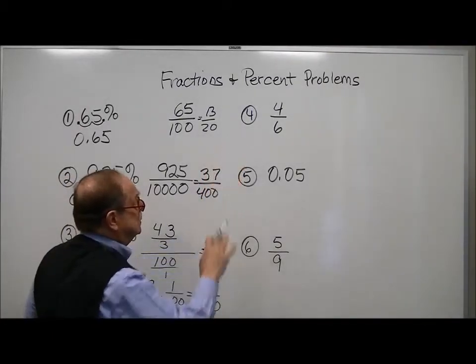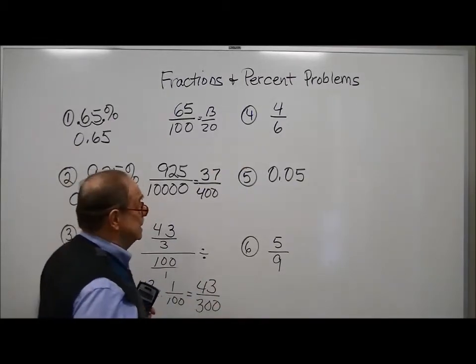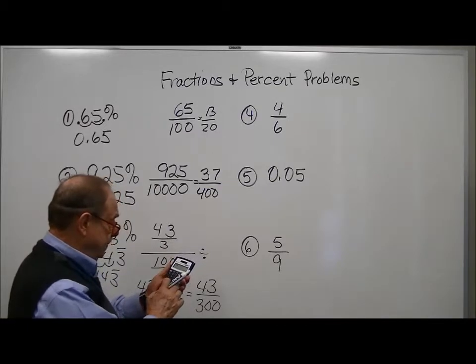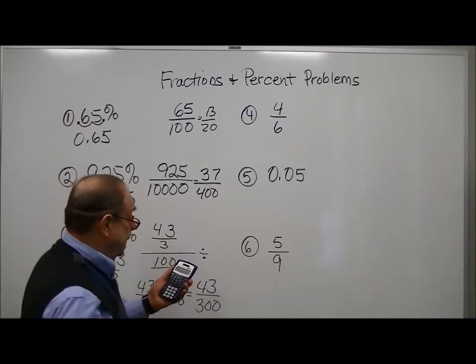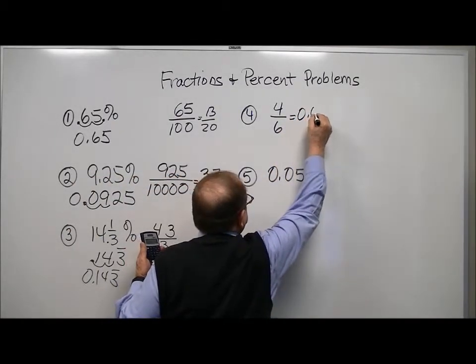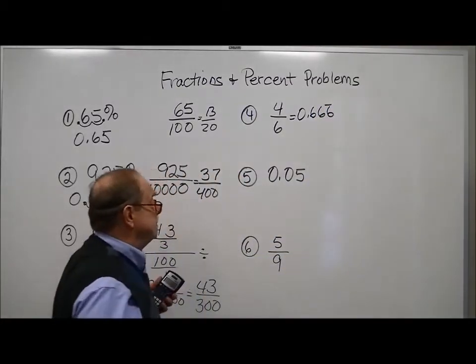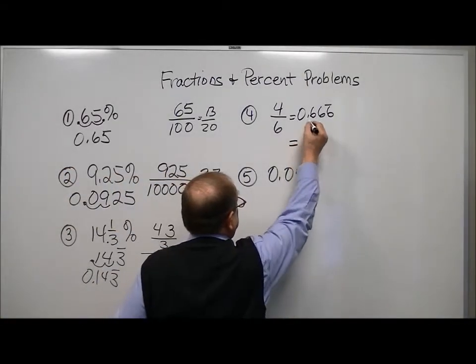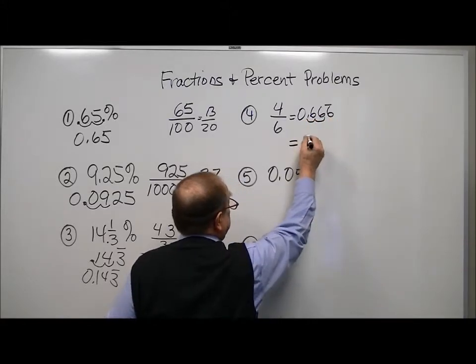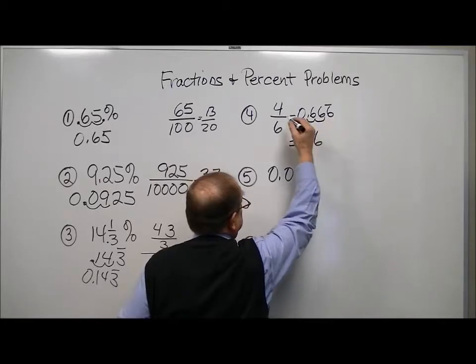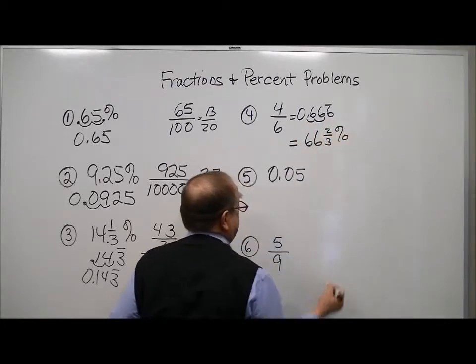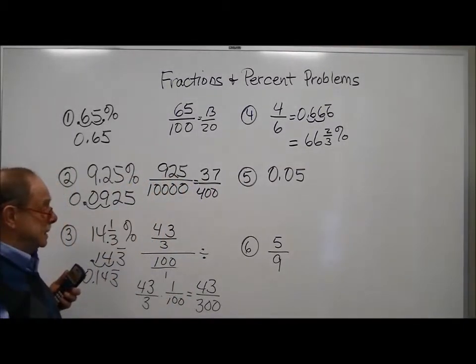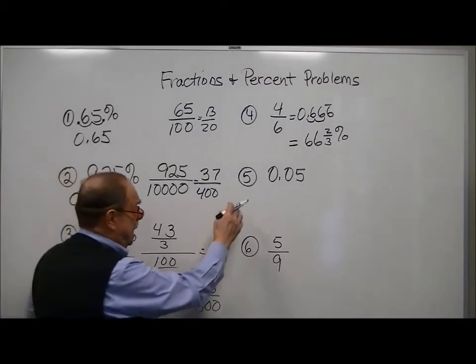Here we want now to convert this fraction to a percent. And we can do so by just taking our calculator and dividing 4 divided by 6. And that gives us the repeating decimal, and it just keeps repeating. So that would be the decimal form. The percent form would be moving it over two places.